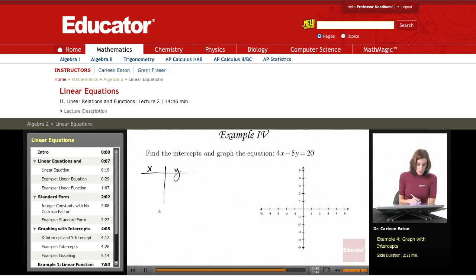First, in order to find the y intercept, I'm going to let x equal 0. This will give me the y intercept, the point at which the line crosses the y axis. To find the y intercept, I'm going to substitute 0 for x.